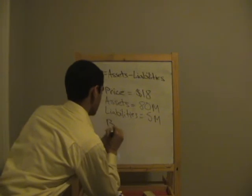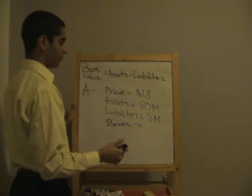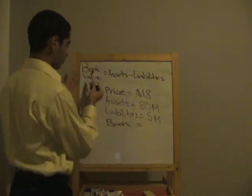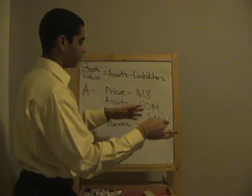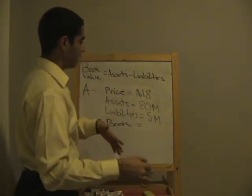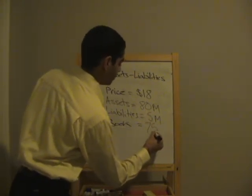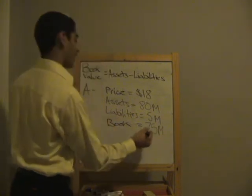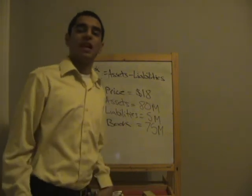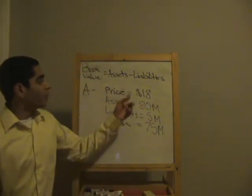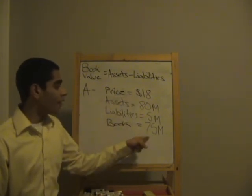This gives us the book value using the formula: book value equals assets minus liabilities. Selling everything off and paying off their debt gets us to $75 million. That is their book value.